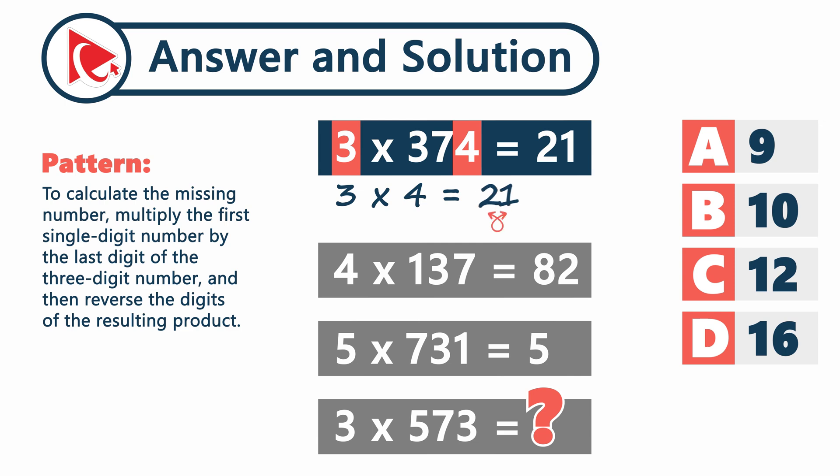Then you need to multiply 3 by 4, and the result would be 12. And then in the last step, we just need to reverse the digits of the 12. 12 reversed is 21.